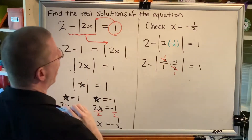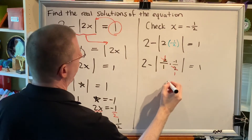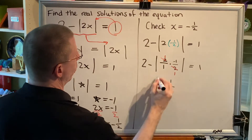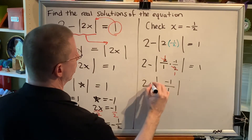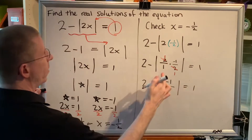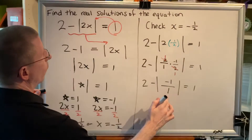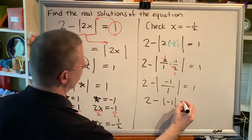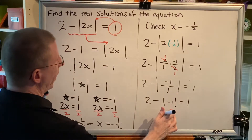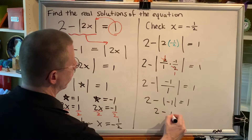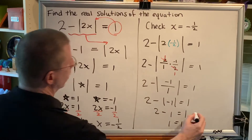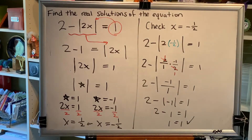Inside we have 1 times negative 1, which is negative 1, over 1 times 1, which is 1. Negative 1 divided by 1 is negative 1. The absolute value of negative 1 is 1. And 2 minus 1 is 1. So the solution checks, and we have a correct answer.